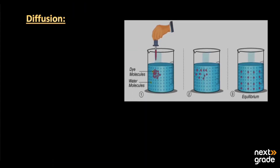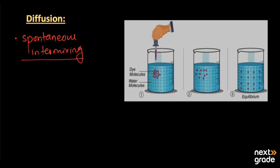The first property is diffusion. By definition, diffusion is the simple, spontaneous intermixing of gas molecules with one another at a given temperature and pressure. This process is called diffusion.